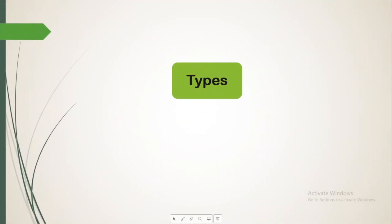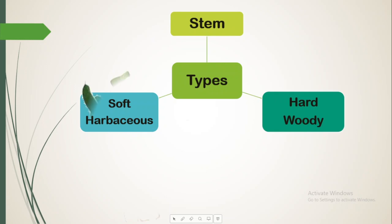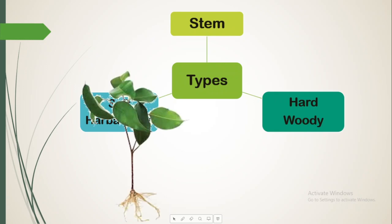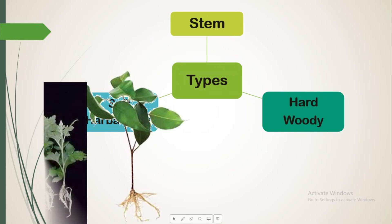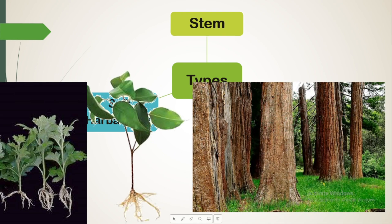Now let's study about the types of stem. Stems are further divided into hard woody stems and soft herbaceous stems. This is the image of a soft herbaceous stem where the stem is not very strong. And we have hard woody trees where the stem is very strong.